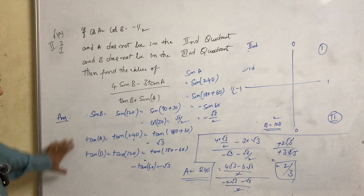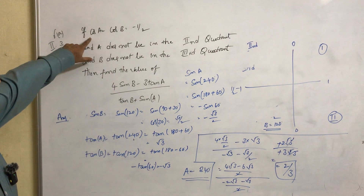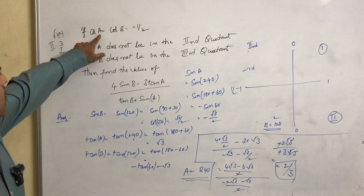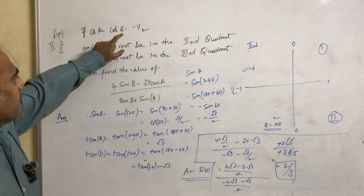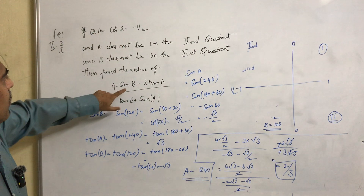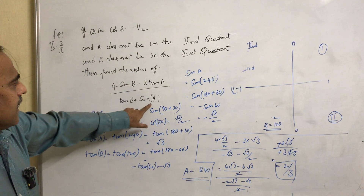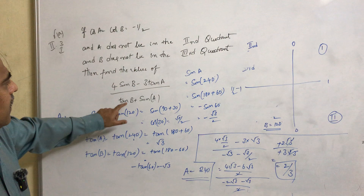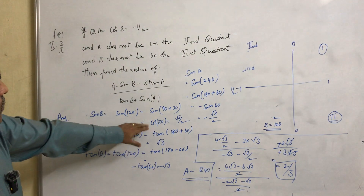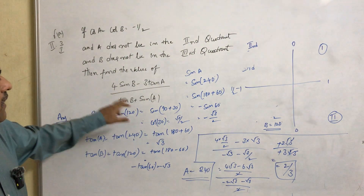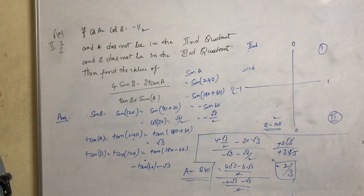To summarize the procedure: from the given conditions, find the values of a and b. Once we have a and b, we can find sin b, tan a, tan b, and sin a. Then substitute all these values into the equation, simplify, and we get the result. That is the procedure.